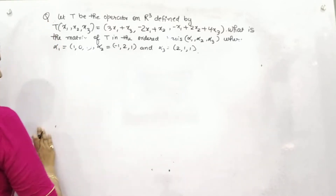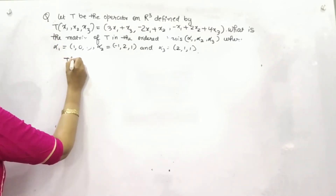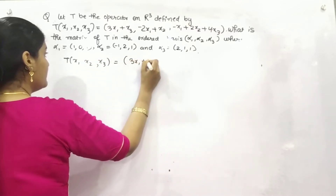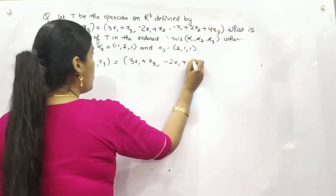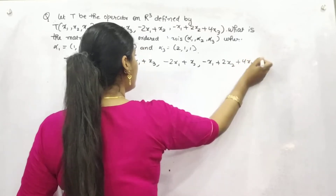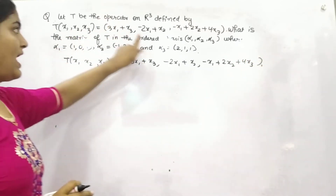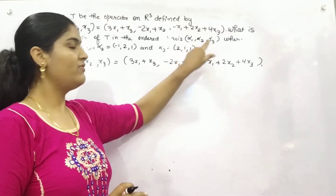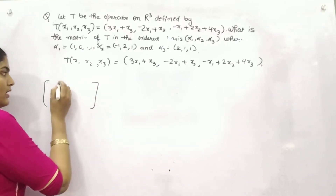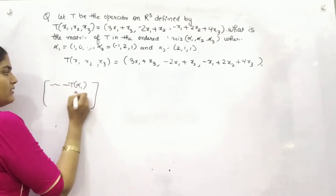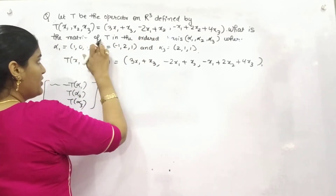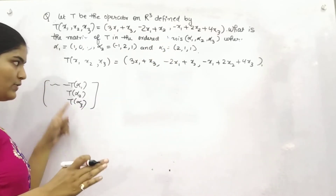What is given to you is your x1, x2, x3. You want to make a matrix with ordered bases α1, α2, α3. So what you need to find out is a matrix having elements T·α1, T·α2, and T·α3, because the bases are α1, α2, α3.